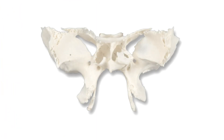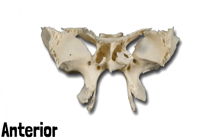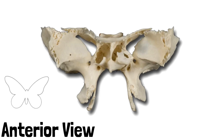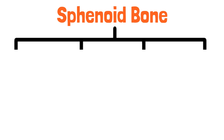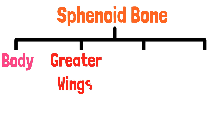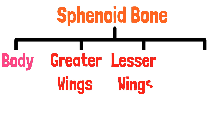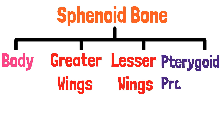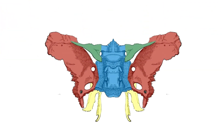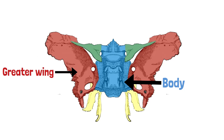This is the anterior view of the sphenoid bone, and as you can see it resembles a butterfly shape. To understand it better, we will divide this bone into 4 parts: the body, greater wings, lesser wings, and the pterygoid processes. The blue shaded part is the body, the red shaded part is the greater wing, the green part is the lesser wing, and lastly the yellow part is the pterygoid process.